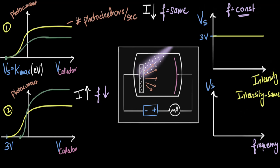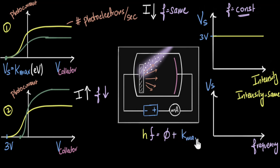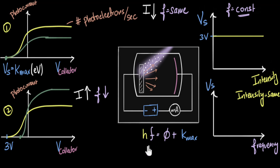We can go back to our equation — Einstein's equation for the photoelectric effect. It says the energy of the photon, H times F, equals the work function (which is a constant) plus the maximum kinetic energy, which is basically the stopping voltage. What I see is a direct linear relationship, and therefore I know it has to be a straight line. But does that straight line start from zero? The straight line can't start from zero, because if the frequency is too low, it's not able to overcome the work function.